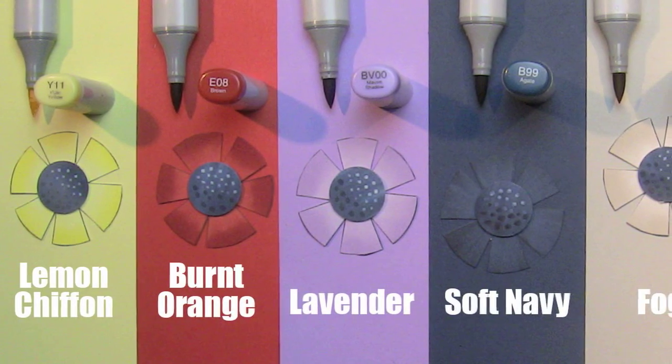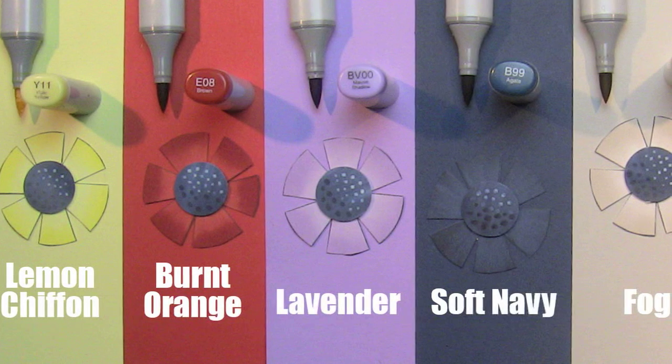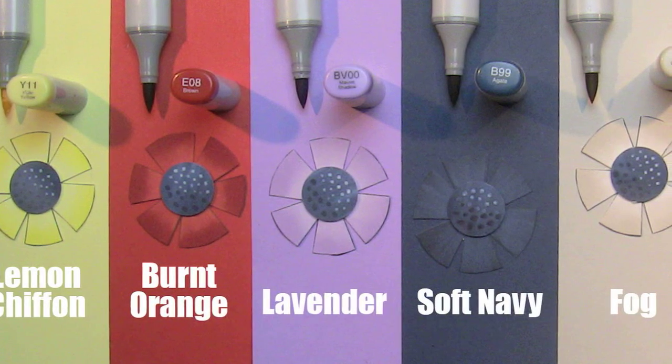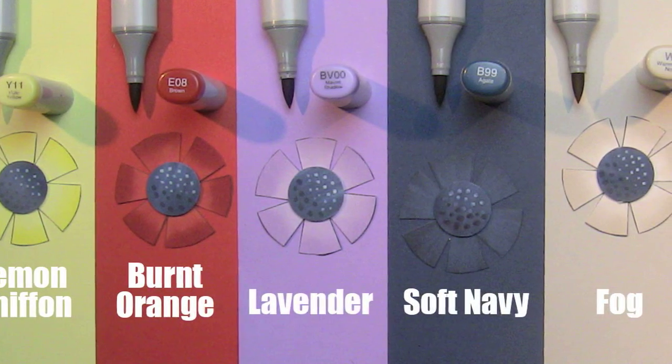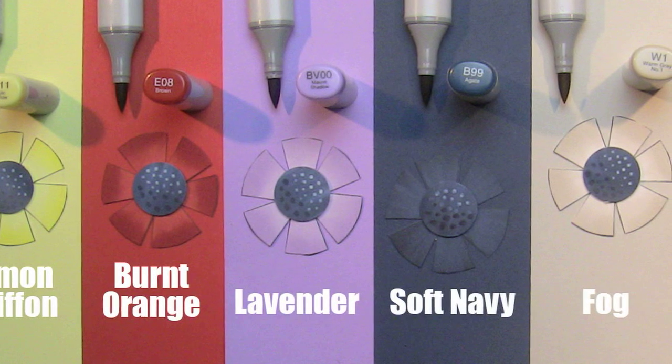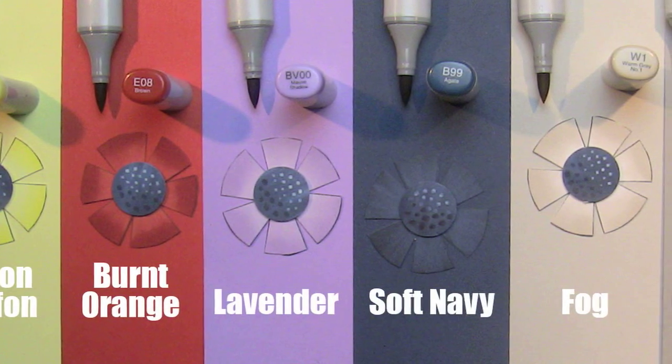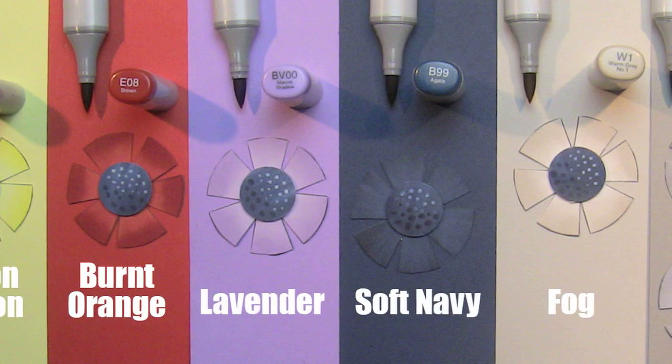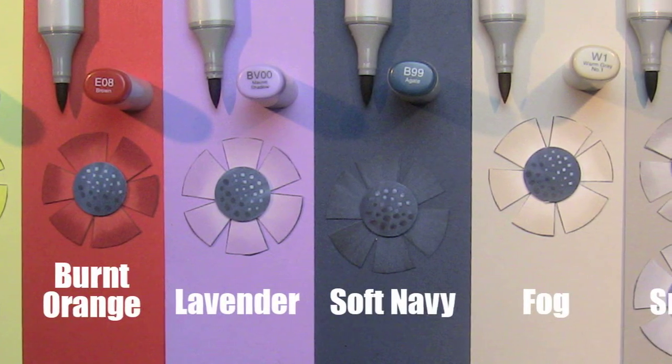Lemon Chiffon works with Y11, Burnt Orange E08, yes an earth tone color. On each one of these, the center of the flowers, one coating of this color is the actual color that matches the paper. So I have some shadows around them with multiple layers of the color.